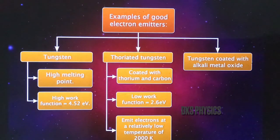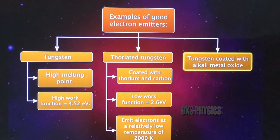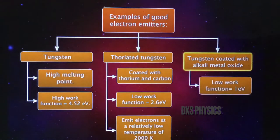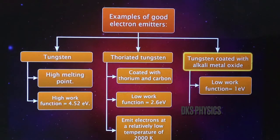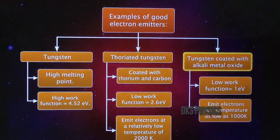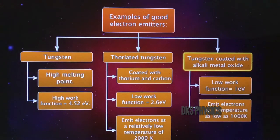The third good emitter is tungsten coated with alkali metal oxide. It has a very low work function of one electron volt. Hence it can emit electrons at a temperature as low as 1000 kelvin.